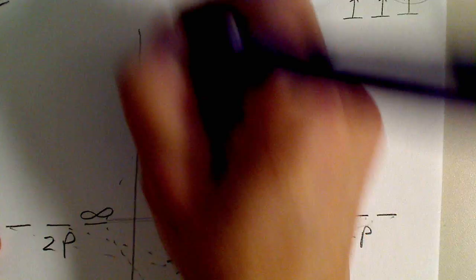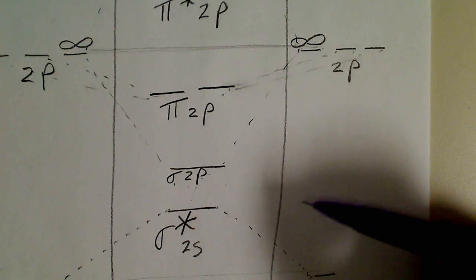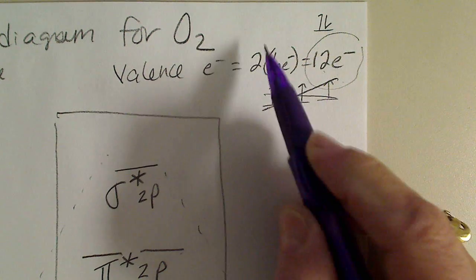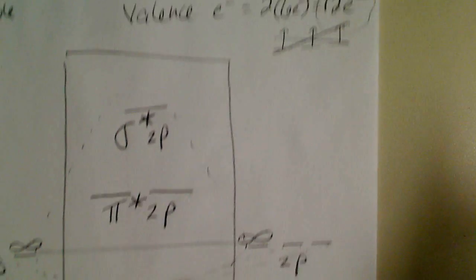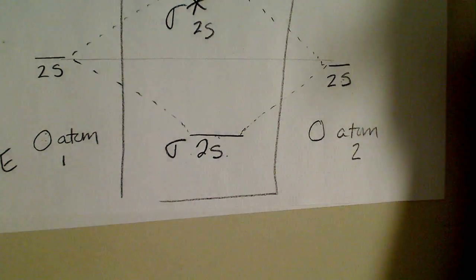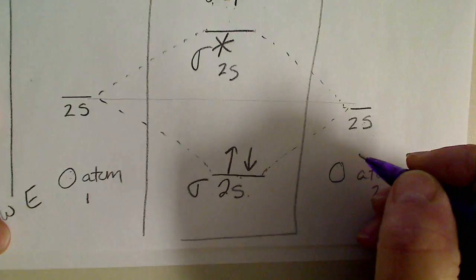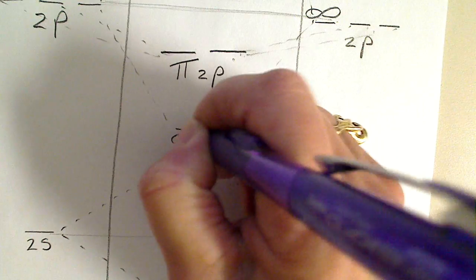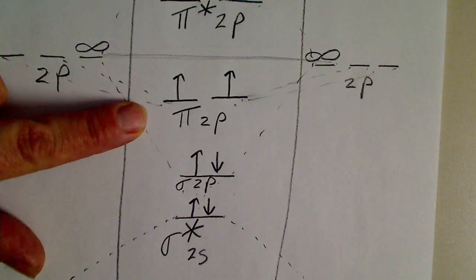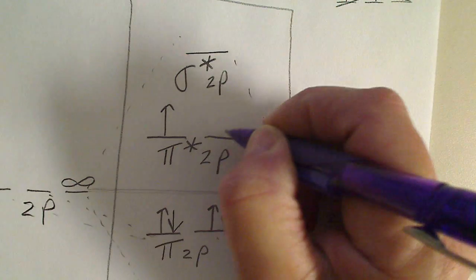The middle section is really the MO diagram. We go back to our electron count: twelve valence electrons in O₂. Using the Aufbau principle, we fill starting with the lowest energy. Two electrons go into sigma 2s, two into sigma star 2s, two into sigma 2p, then two into the degenerate pi 2p orbitals — keeping electrons unpaired since they have the same energy — and finally the last four electrons fill the pi star 2p orbitals.